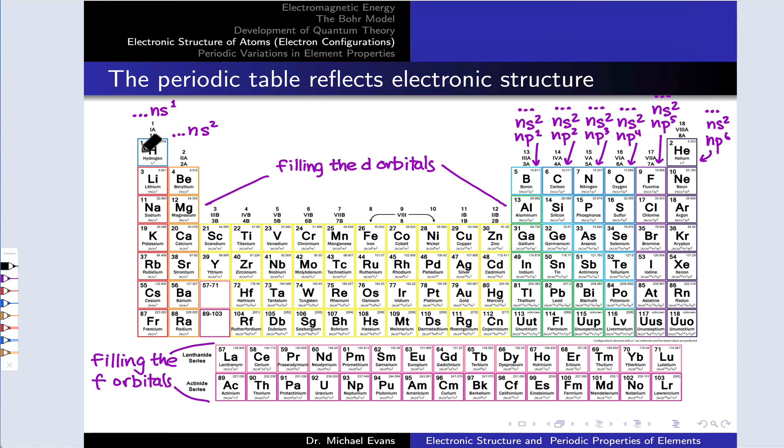As we fill, we add electrons from the lowest energy orbitals up. And as we do that, we fill, for example, the 1S orbital first. That gets us to helium. The 2S orbital next, that gets us to beryllium. And what we can see here is that all of the elements in these first two groups are filling up that S subshell. So they're what we call the S block.